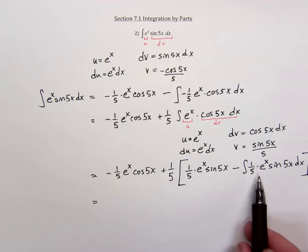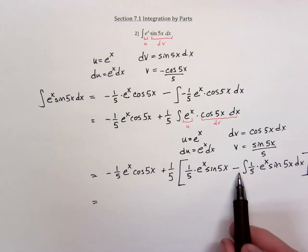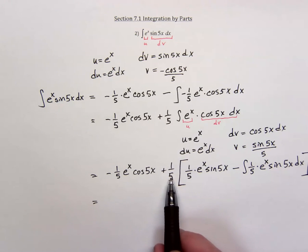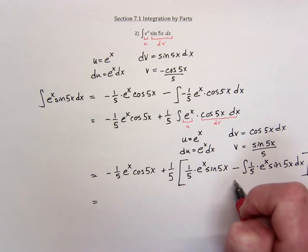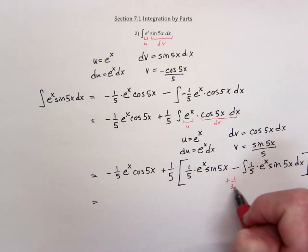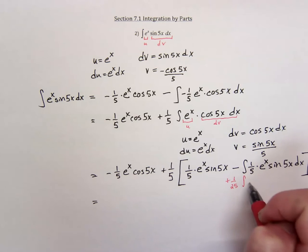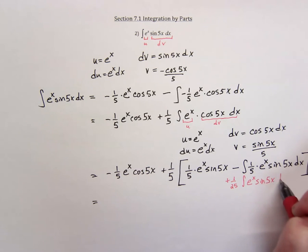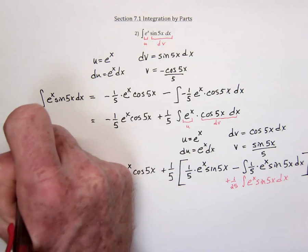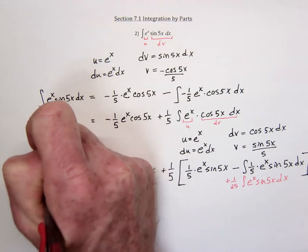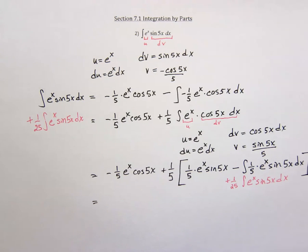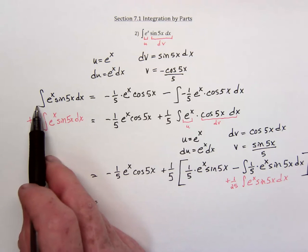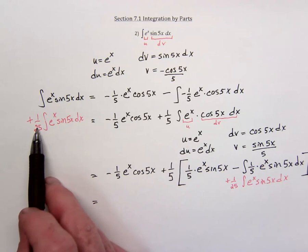Here's what I was talking about — the original integral has reappeared, but it now has a negative one-twenty-fifth attached to it. Notice the one-fifth and negative one-fifth. That means we need to add one-twenty-fifth of this integral to both sides of the equation. So we add one-twenty-fifth of our original problem to both sides. Consequently, we would have twenty-five over twenty-five plus one more, which is twenty-six over twenty-five.